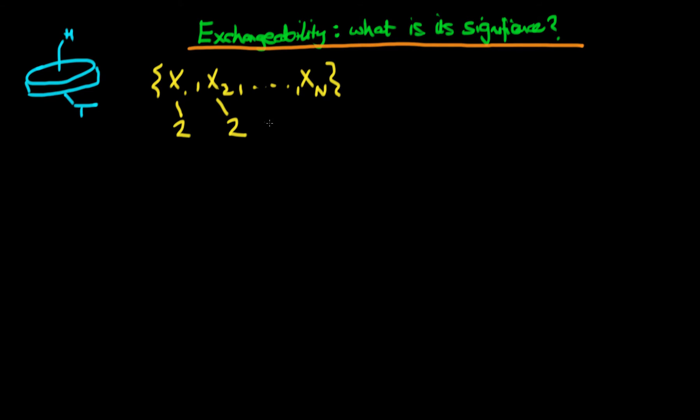So it can either come up as heads or tails for the first case, heads or tails for the second, all the way through to heads or tails for the last. Here we can see there are going to be 2 to the n possible states.